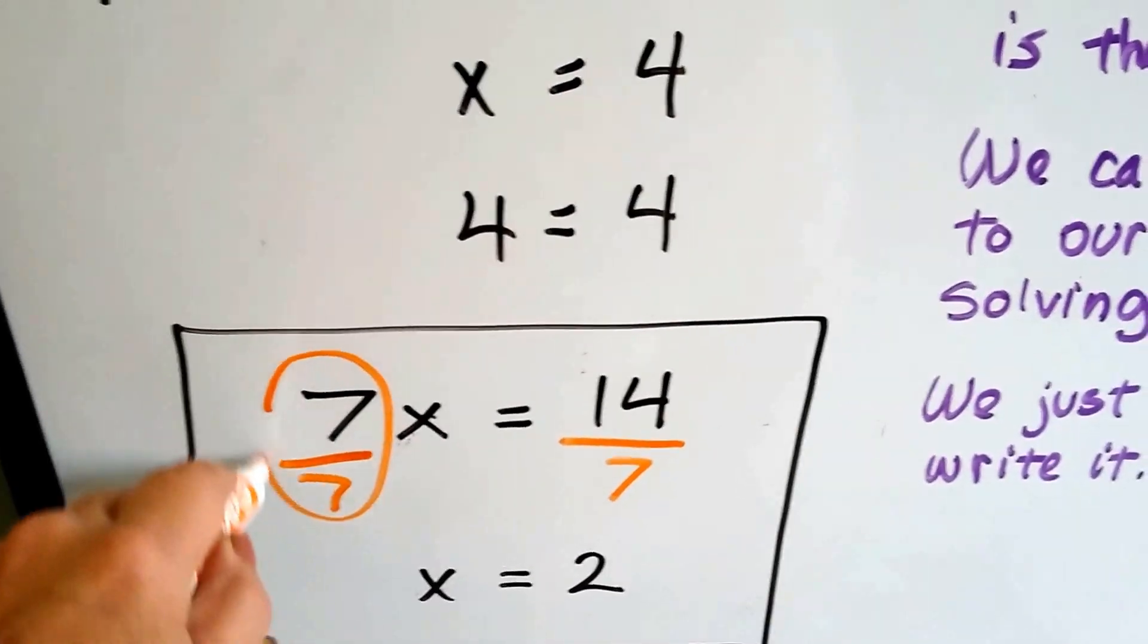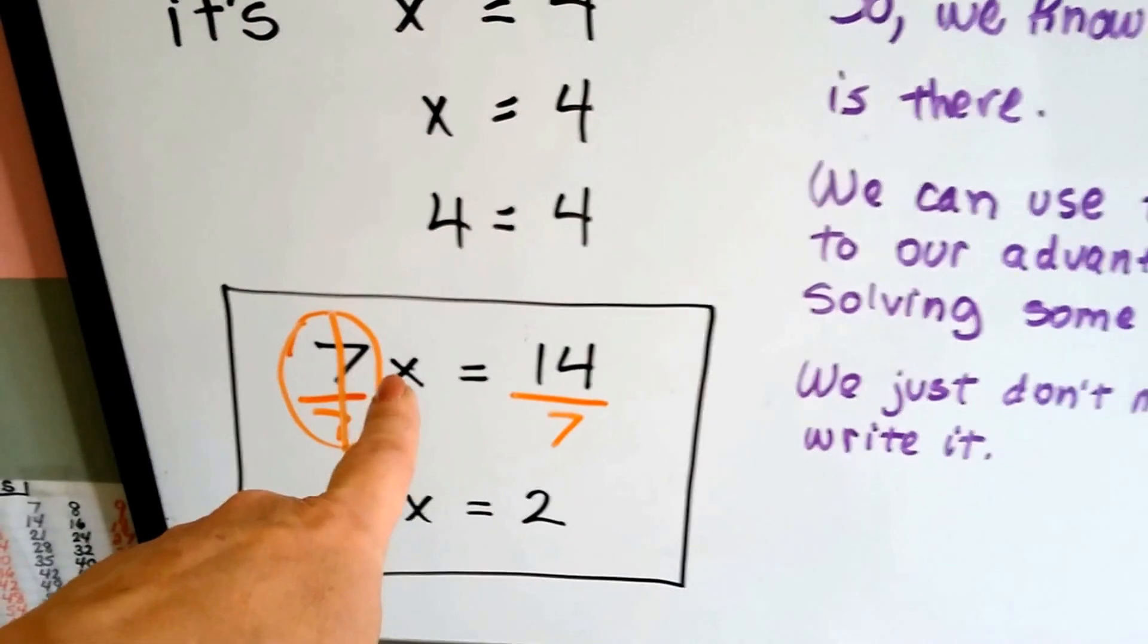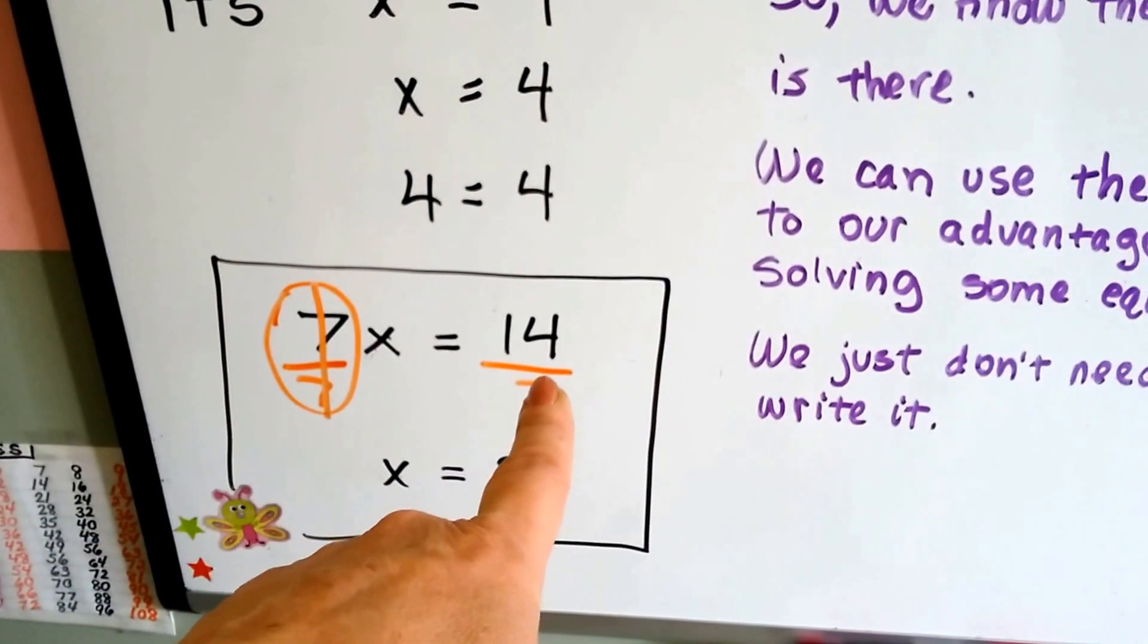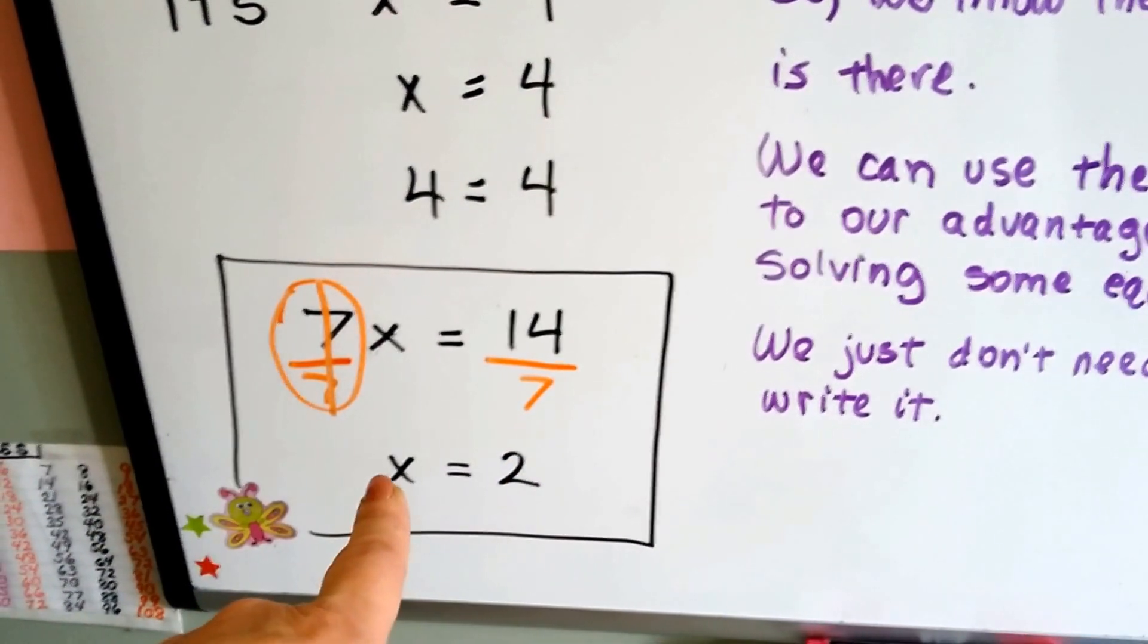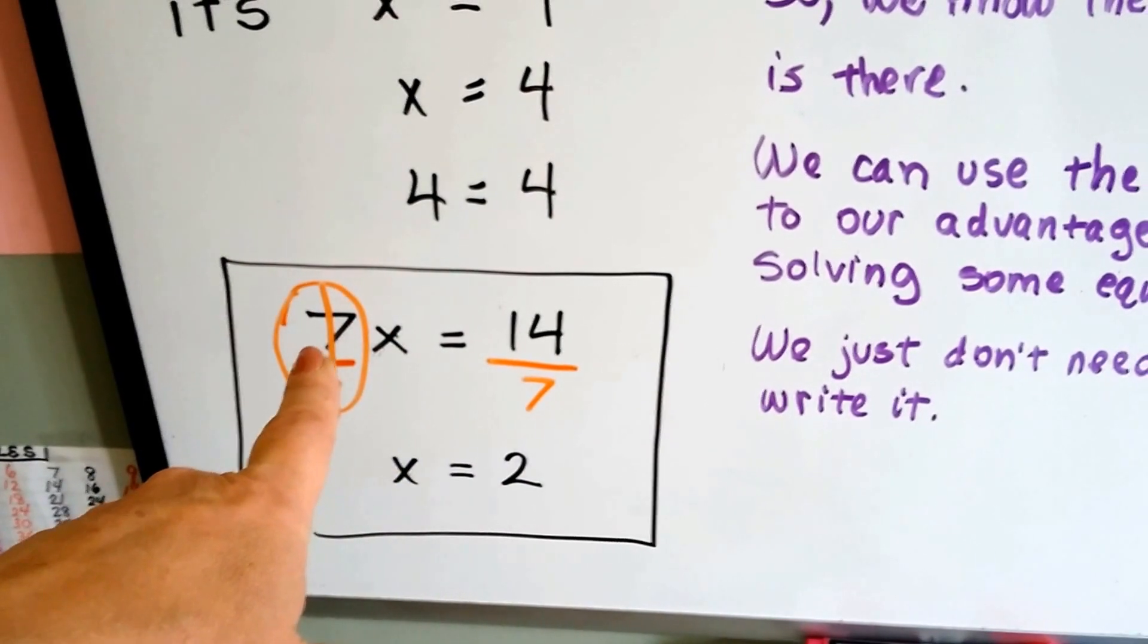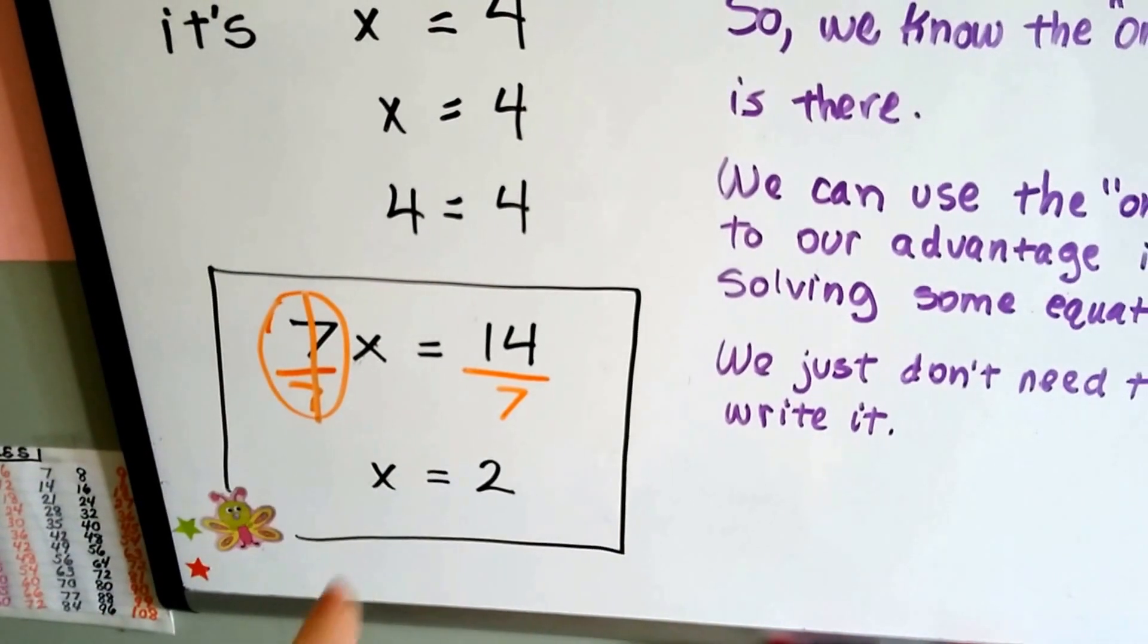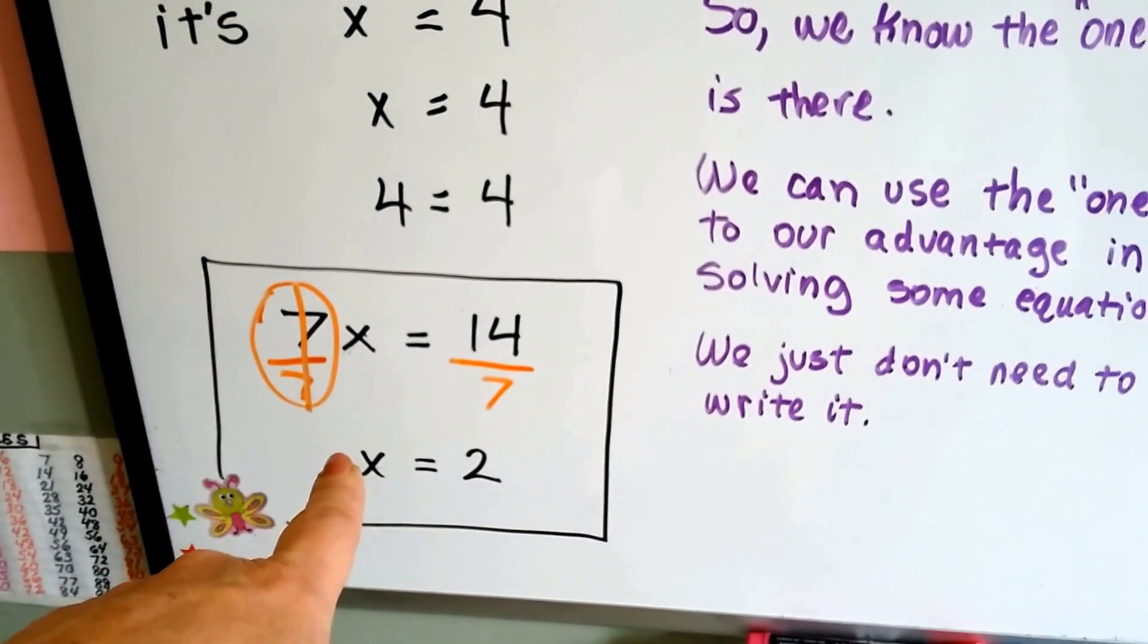That'll get rid of this 7. We know that when the numerator and denominator is the same, it creates a 1. That makes this 1x. So now we divide this side by 7 and get a 2, and we know that 1x equals 2. That way, we were able to isolate and get rid of the 7. So it's actually an invisible 1 in front of that. We just don't need to write it.